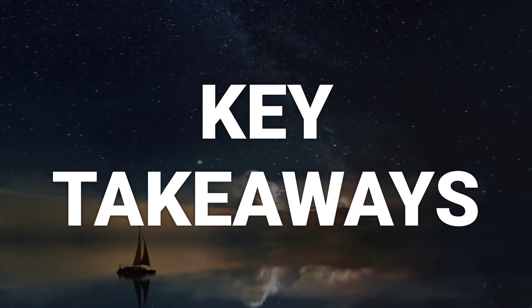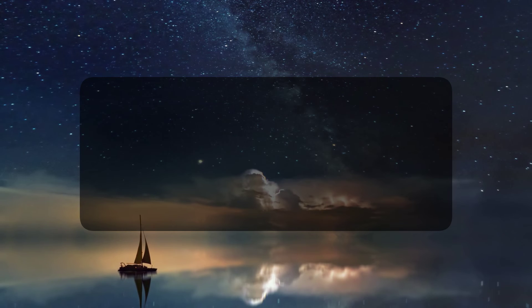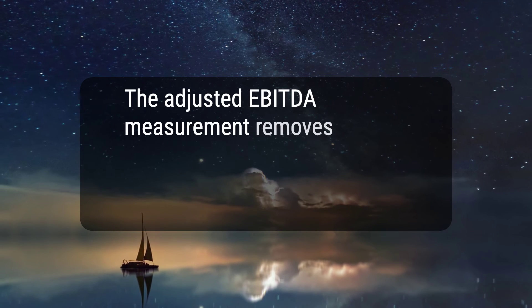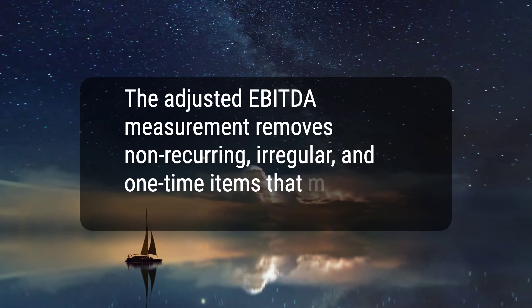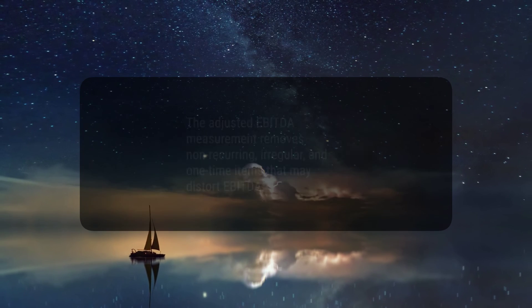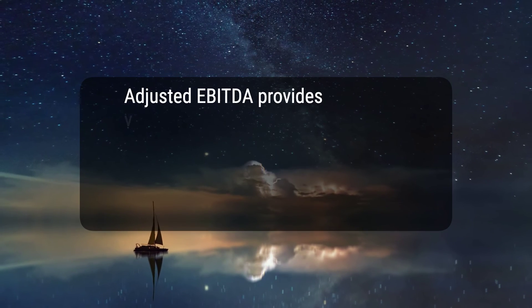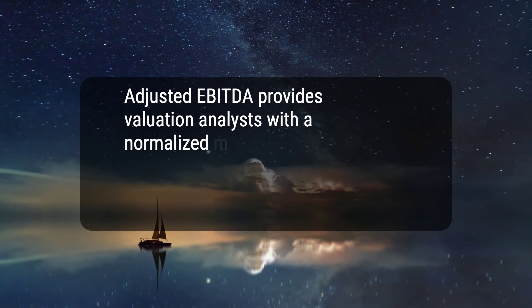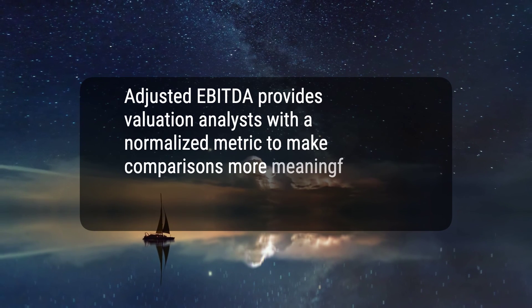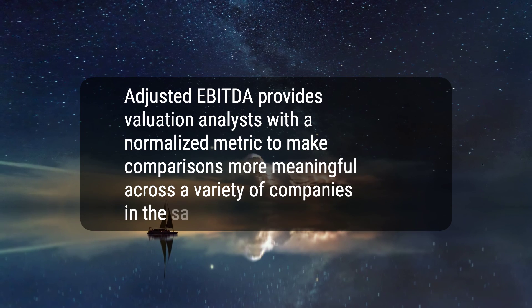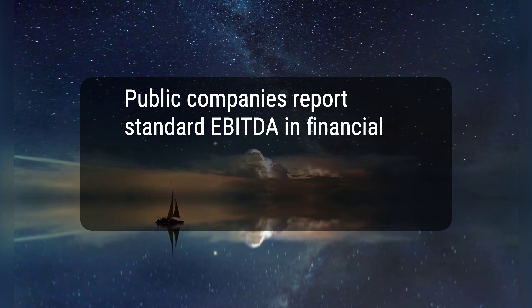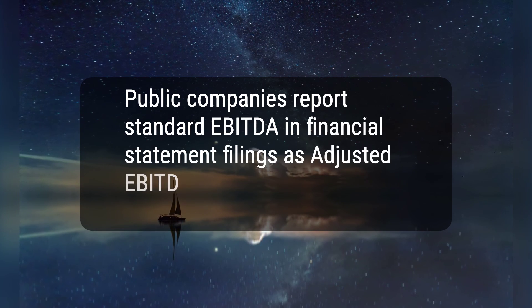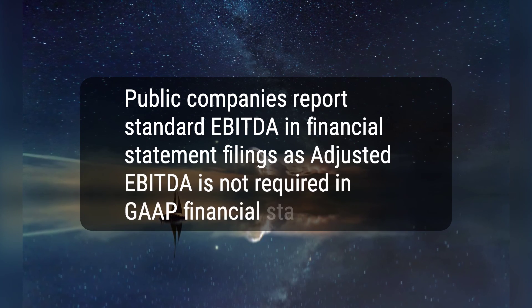Here are three key takeaways. 1. The adjusted EBITDA measurement removes non-recurring, irregular, and one-time items that may distort EBITDA. 2. Adjusted EBITDA provides valuation analysts with a normalized metric to make comparisons more meaningful across a variety of companies in the same industry. 3. Public companies report standard EBITDA in financial statement filings, as adjusted EBITDA is not required in GAAP financial statements.